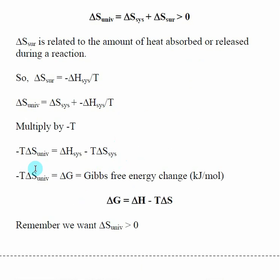And what we do is we define this negative T delta S of the universe as being delta G or the Gibbs free energy change. And that's what we're going to be looking at. If we really want to understand if a reaction is spontaneous or non-spontaneous, we need to consider the entropy,